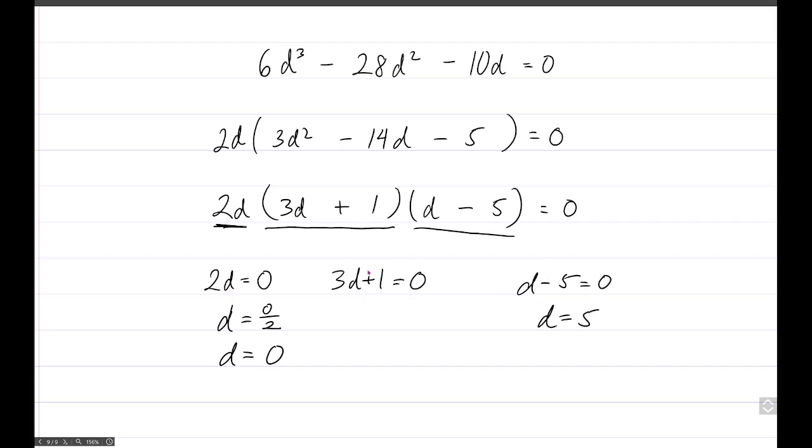Now we'll attack the more complicated equation. First, subtract 1 on both sides, and you'll have 3 times d is negative 1. And then divide both sides by 3, and you'll have d is negative 1 third. So there are 3 values of d here.